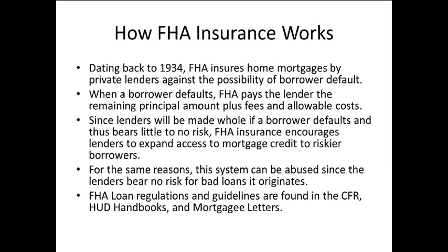The FHA program is quite old, going back to 1934. FHA insures home mortgages lent by private lenders against the possibility of the borrower defaulting. When the borrower defaults, FHA will pay the lender the remaining principal amount plus any fees and allowable costs. Since lenders will be made whole if the borrower defaults and thus bear little to no risk, FHA insurance encourages lenders to expand access to mortgage credit to riskier borrowers. But the system can be abused since the lender bears no risk for bad loans it originates — similar to the abuse we saw during the subprime crisis.